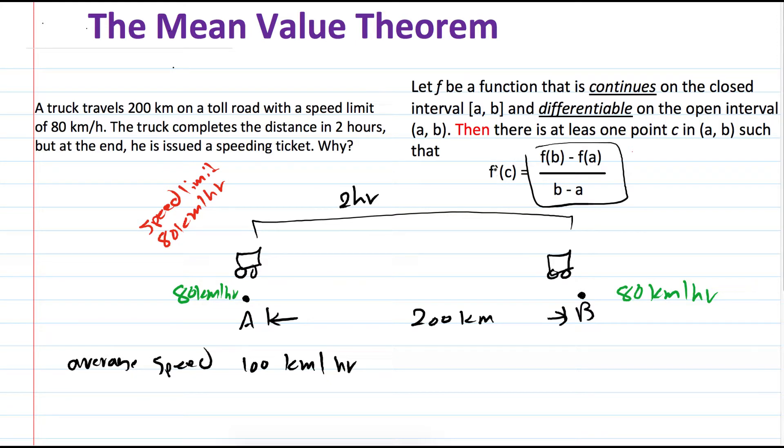That's why they issue him a speeding ticket. By using the mean value theorem, since his average speed is 100 kilometers per hour, then at one particular point, his speed has been 100 kilometers per hour, and that exceeds the speed limit of the toll road. So that is the example.